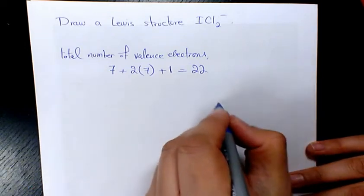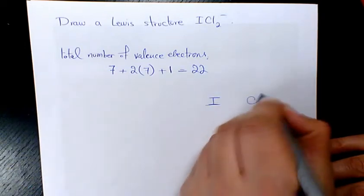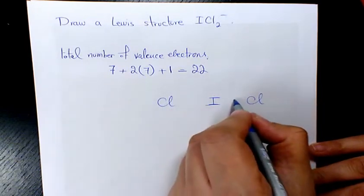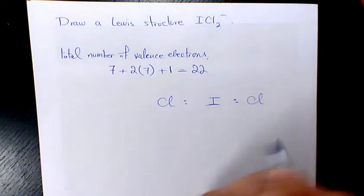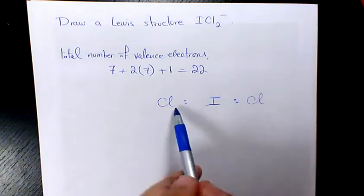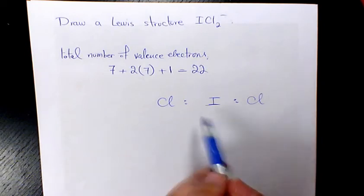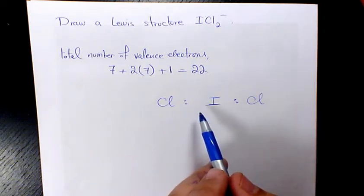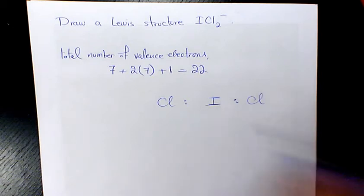So I'm gonna use I as the central element and we have Cl on two sides. Then what I need to do is place one pair of electrons between each adjacent pair of atoms, so every two of these dots represents a bonding electron pair that forms a single covalent bond.